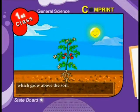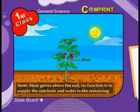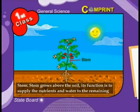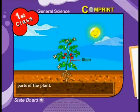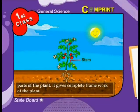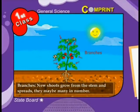Stem: the stem grows above the soil. Its function is to supply the nutrients and water to the remaining parts of the plant. It gives the complete framework of the plant.